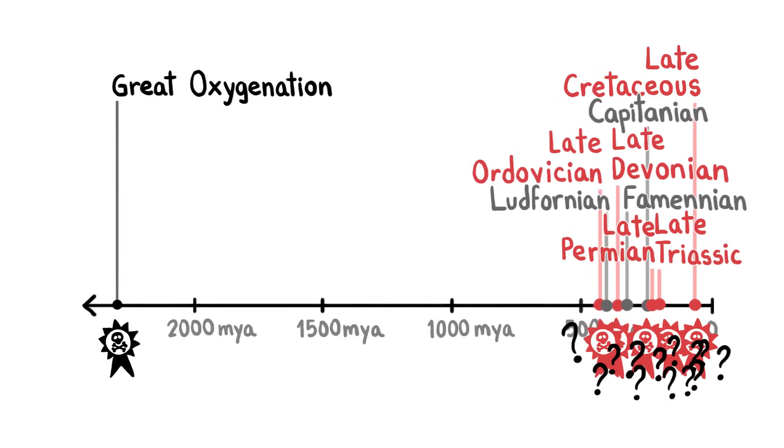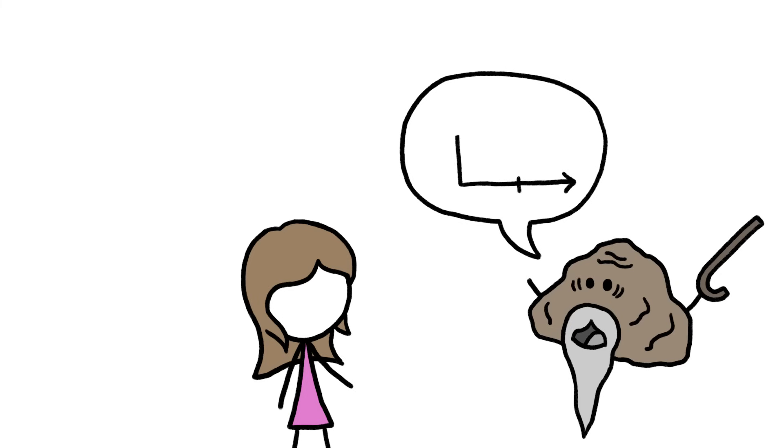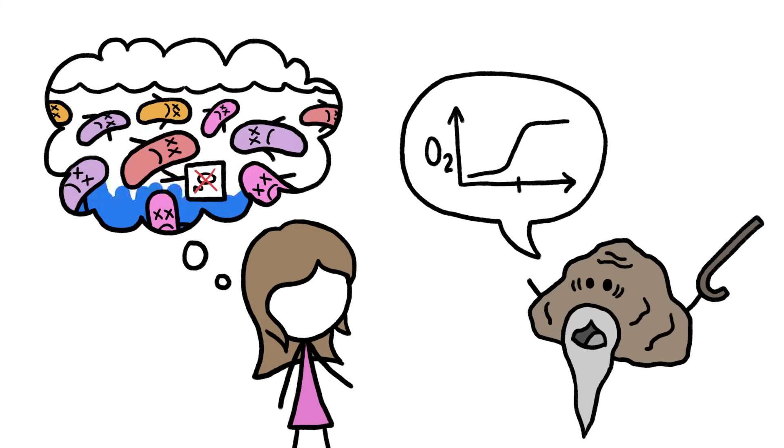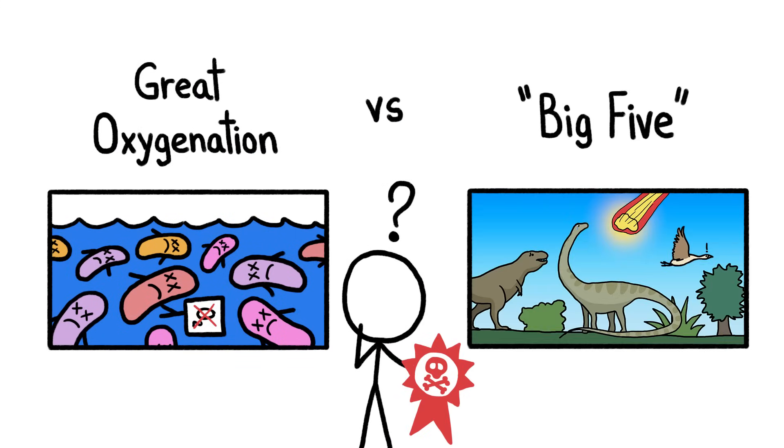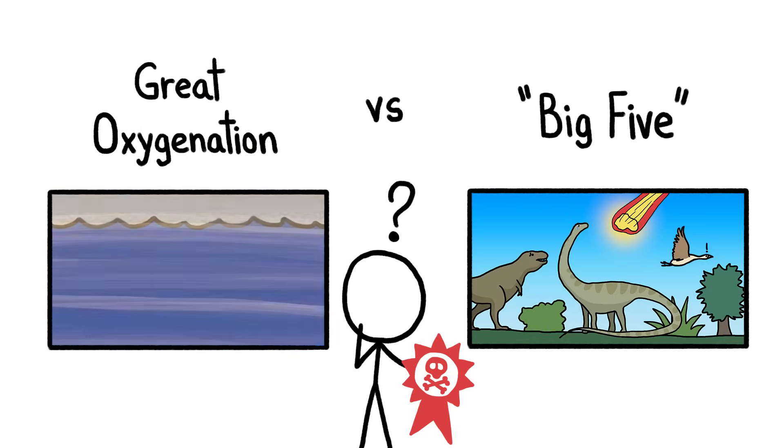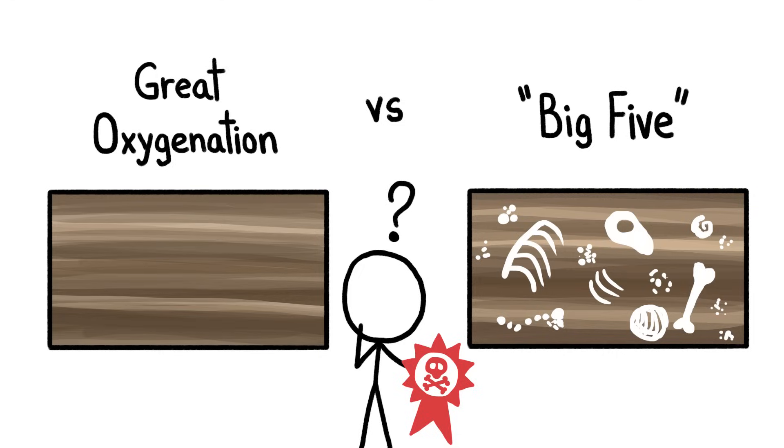Take the great oxygenation event of 2.3 billion years ago. Evidence from ancient rocks tells us that levels of atmospheric oxygen spiked around this time, poisoning the oxygen-hating microbes that had dominated Earth for well over a billion years. And yet, we can't really say how that extinction compares to the Big Five, because its victims were microscopic and left virtually no signature in the fossil record.